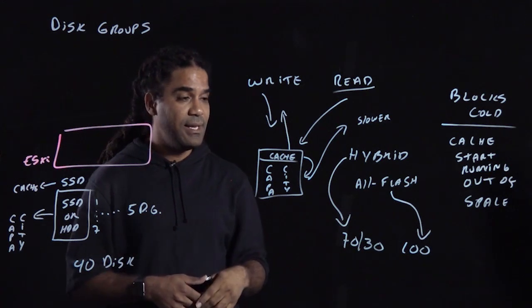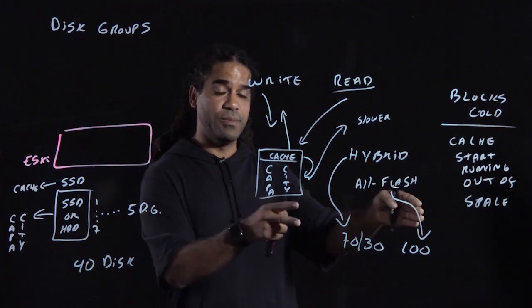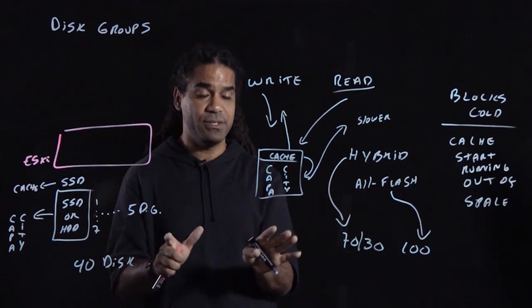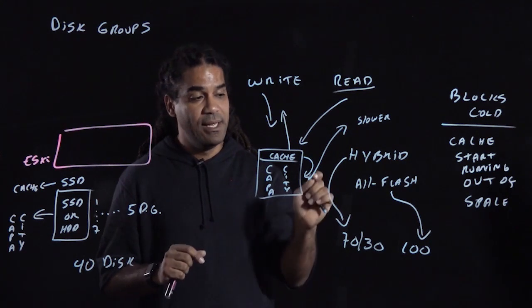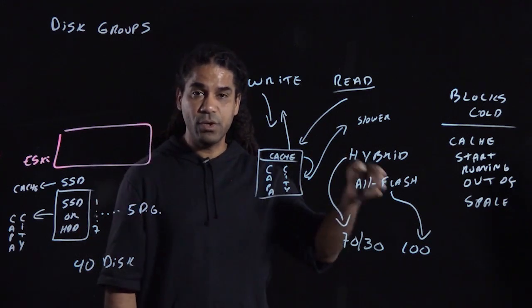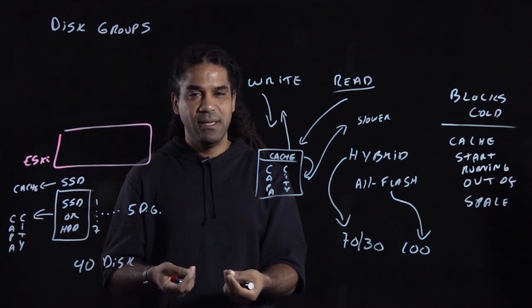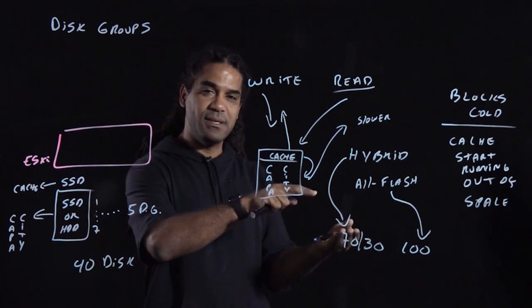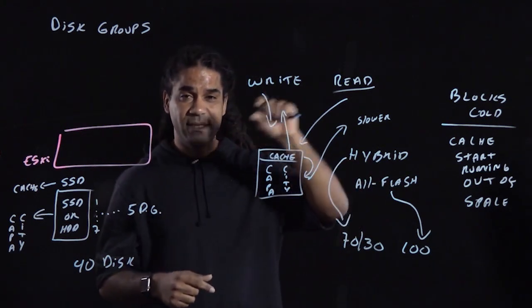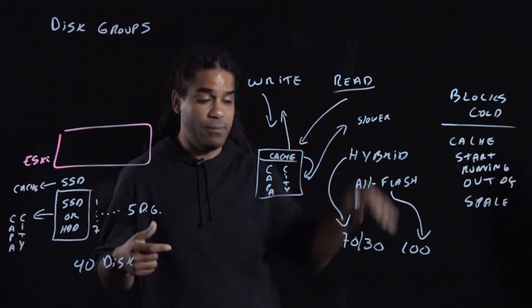A few things to add. If you go hybrid or all-flash, every disk group in the cluster has to be the same configuration. It has to be either hybrid or flash. You cannot mix and match those two. Also, the disk groups, the number of capacity disks that you have in any disk group could be different. However, it is strongly recommended that the disk groups in the cluster are homogeneous. So they have more or less the same number of capacity disks, more or less the same cache disk, so that performance is consistent regardless of where you're storing the information.